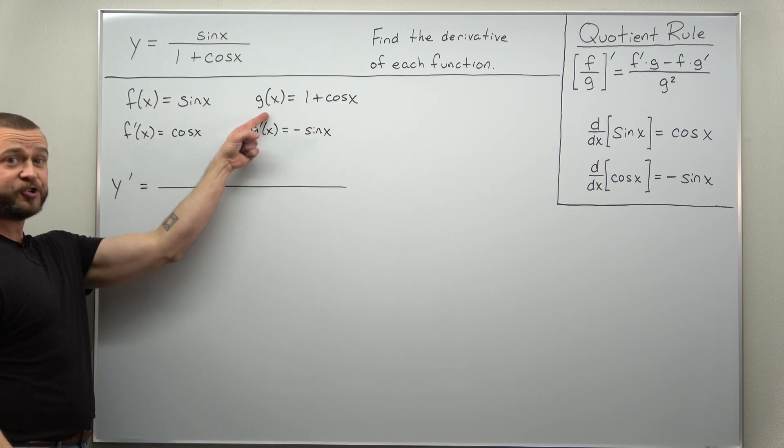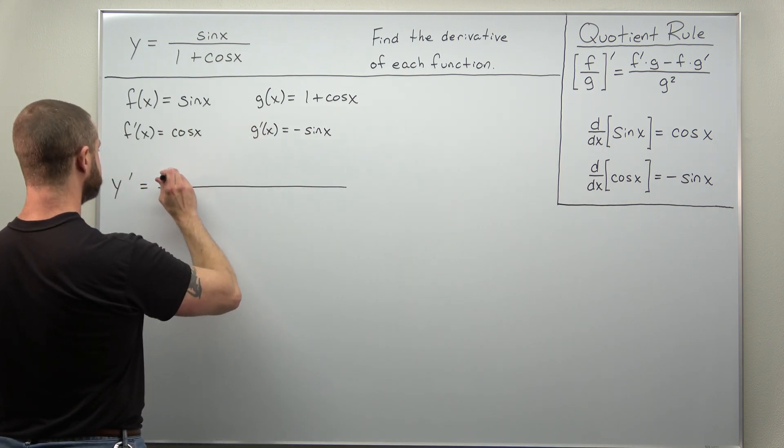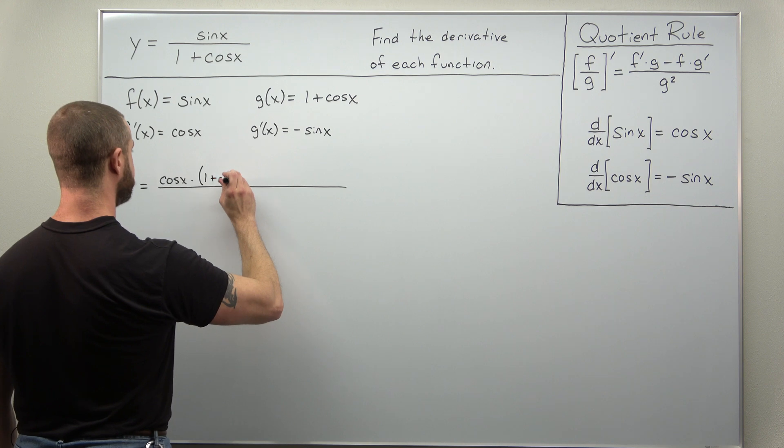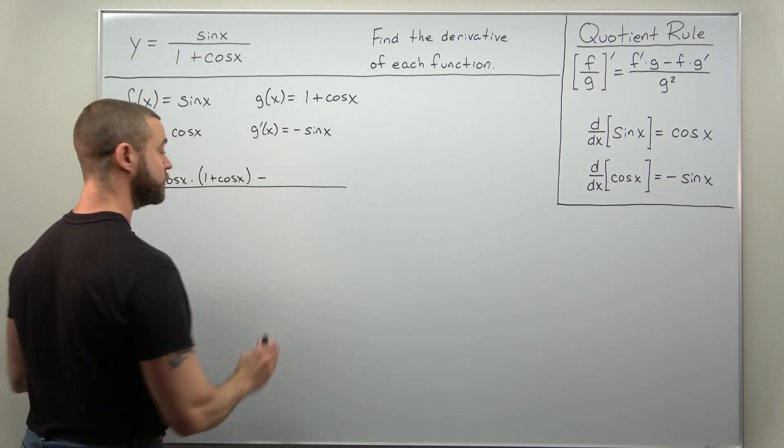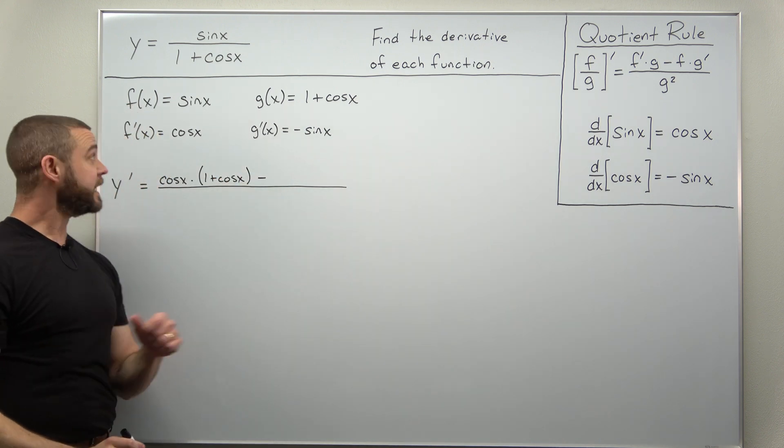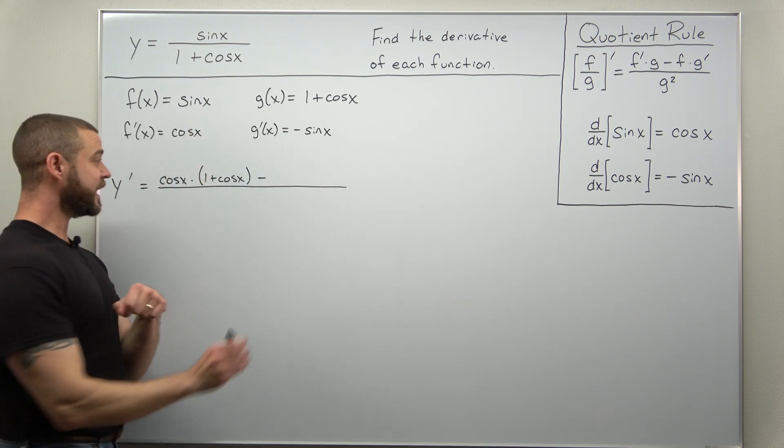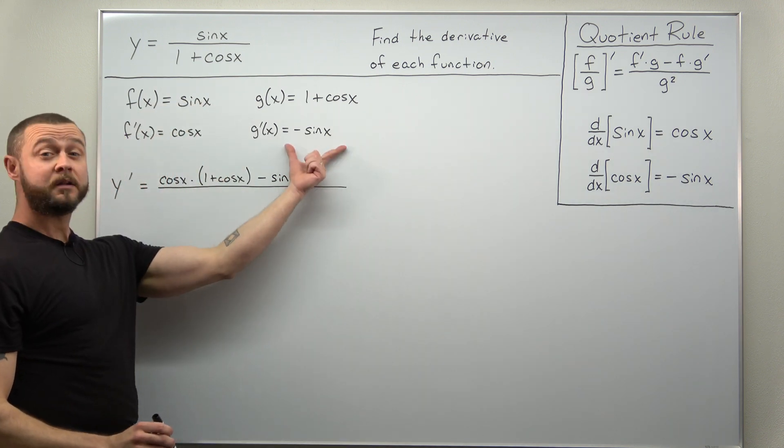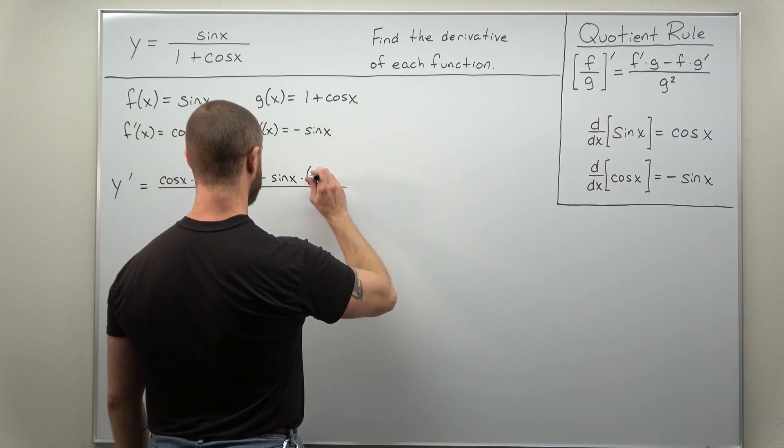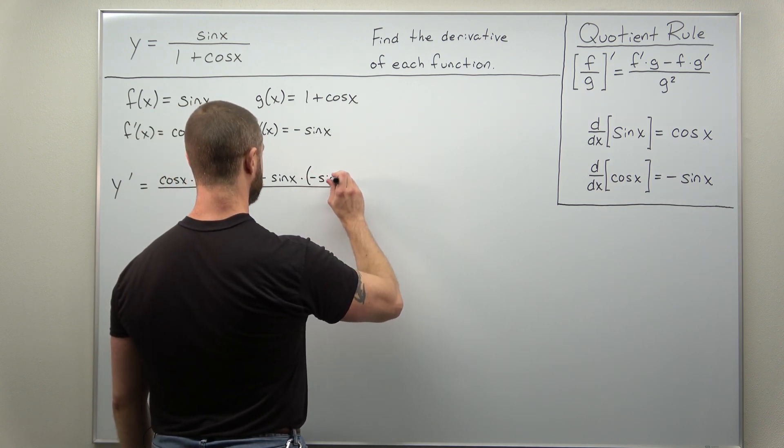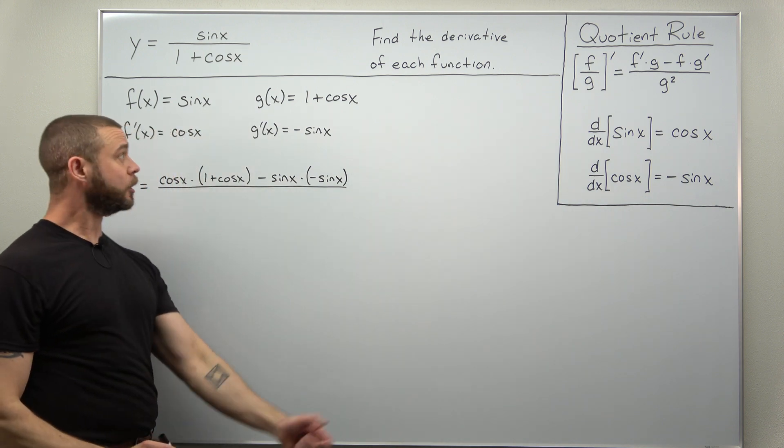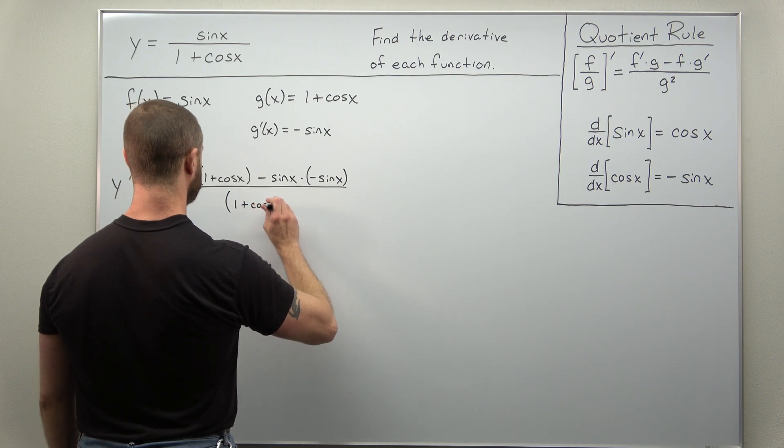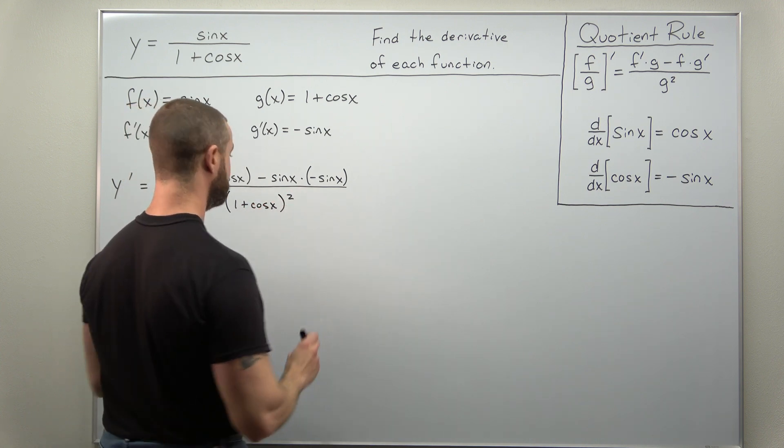The quotient rule says we have f prime times g so cosine of x times 1 plus cosine of x. The quotient rule has a minus and the next part is now f sine of x times g which is negative sine of x. All right and that's all over g squared which is now 1 plus cosine of x squared.